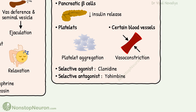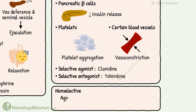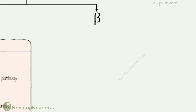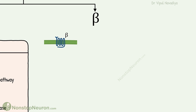These were the individual subtypes of alpha-receptors. An example of a non-selective agonist that acts on both subtypes of alpha-receptors is adrenaline, and a non-selective antagonist is phentolamine. So this was all about alpha-adrenergic receptors.